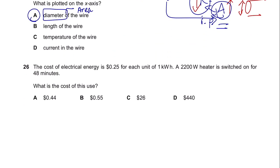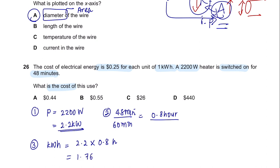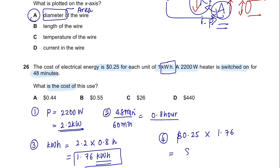Question 26. The cost of electrical energy is $0.25 per kilowatt hour. A 2200 W heater is switched on for 48 minutes. Step 1: convert 2200 W to 2.2 kW. Step 2: convert 48 minutes to 0.8 hours. Step 3: energy = 2.2 kW × 0.8 h = 1.76 kWh. Step 4: cost = 1.76 × $0.25 = $0.44, which is E. Remember to follow these steps to always get the cost correctly.